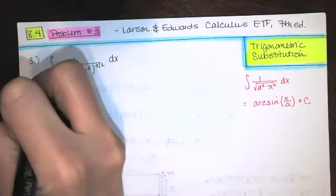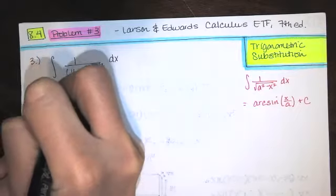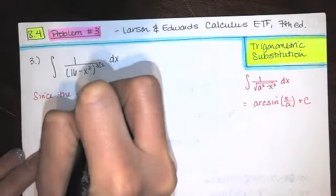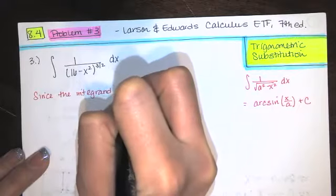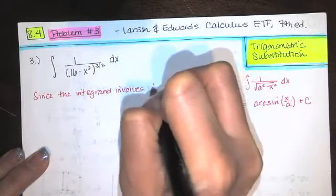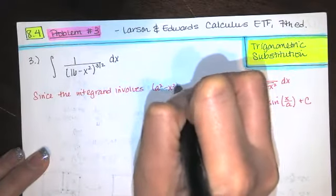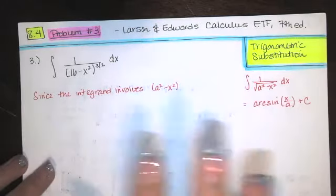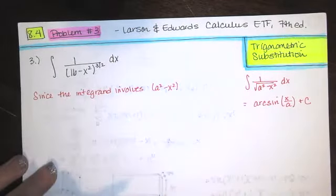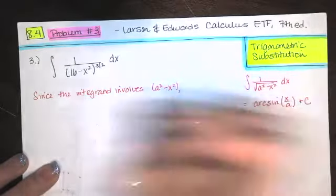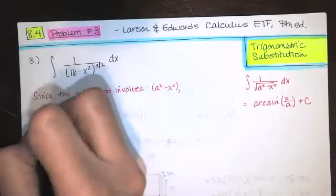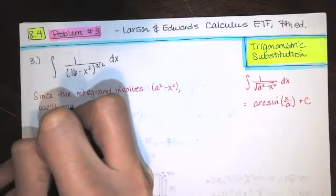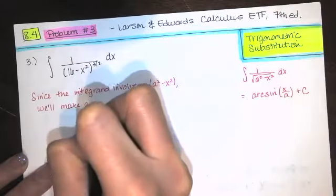Since the integrand involves an a squared minus x squared, which looks like the arc sine integral but is not an arc sine integral because of the wrong power, and u-sub doesn't work, we'll make a sine substitution.